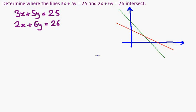In this question, we are asked to determine where the lines 3x + 5y = 25 and 2x + 6y = 26 intersect.